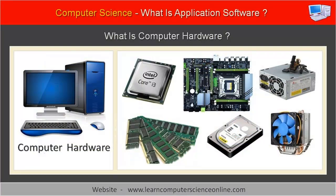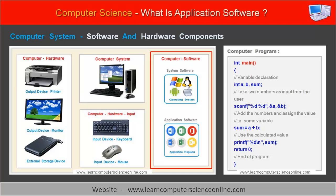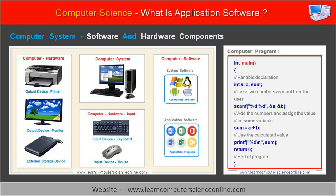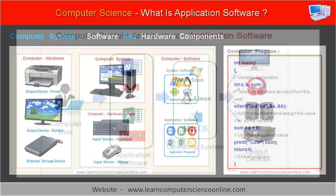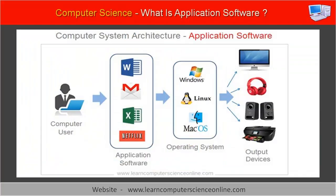The hardware components are physical parts of the system which we can see, and these components are physically connected to the system. Whereas the software components consist of a set of instructions to perform various tasks on the system. The application software also provides an interface to the system user.